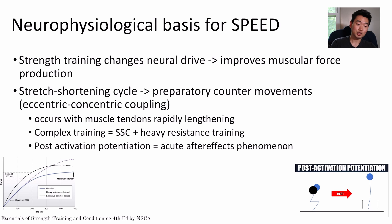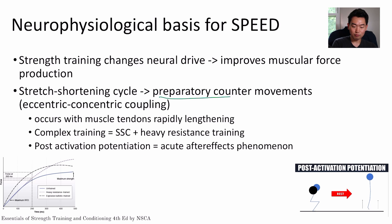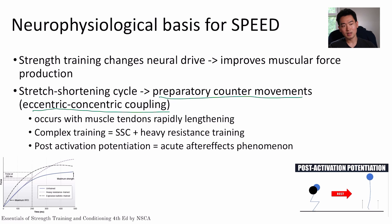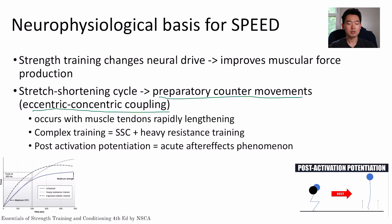Moving on to the neurophysiological basis for speed-strength training: changes in neural drive improve muscular force production by altering motor neurons and how they react. The stretch-shortening cycle includes preparatory counter movements and eccentric-concentric coupling. Think of a squat jump — you're eccentrically loading the quads in a deep squat and then concentrically contracting them to jump. This occurs with muscle tendons rapidly lengthening.